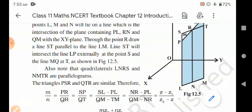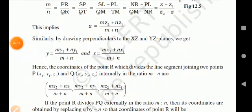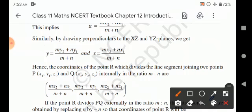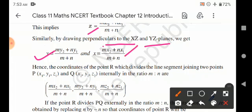This gives us the expression (z minus z1) divided by (z2 minus z) equals m/n, so z = (mz2 + nz1)/(m + n). Similarly, by drawing perpendiculars to the XZ and YZ planes we get y = (my2 + ny1)/(m + n) and x = (mx2 + nx1)/(m + n).